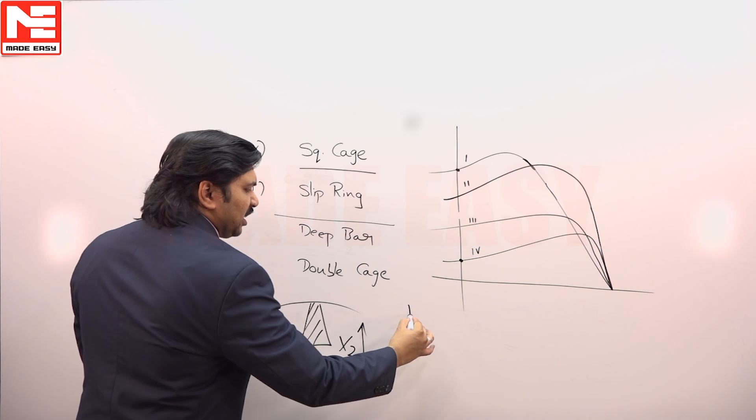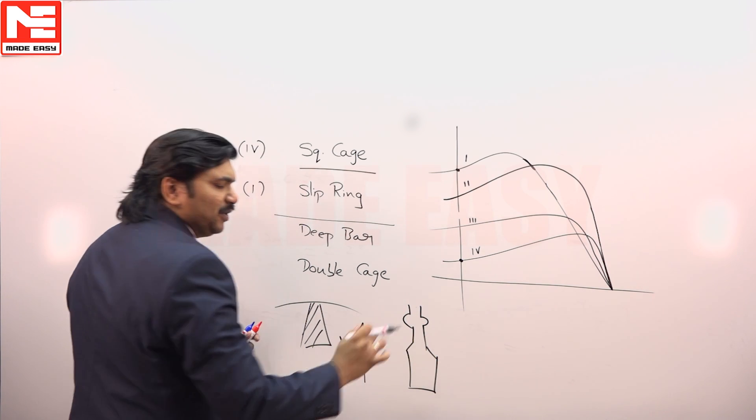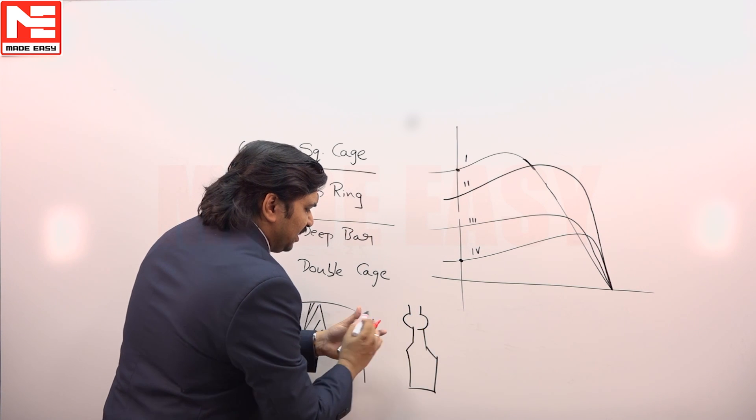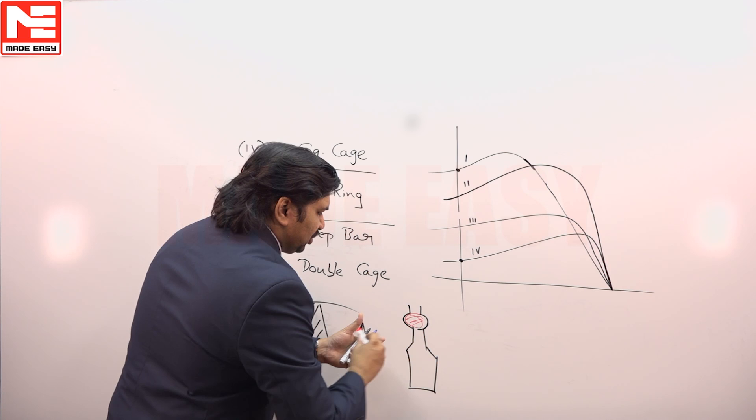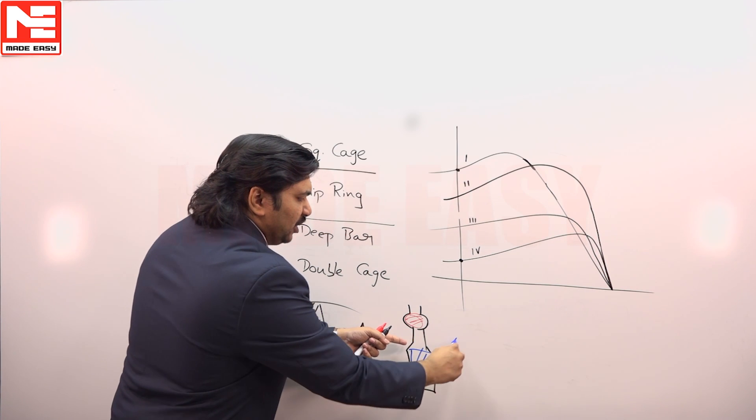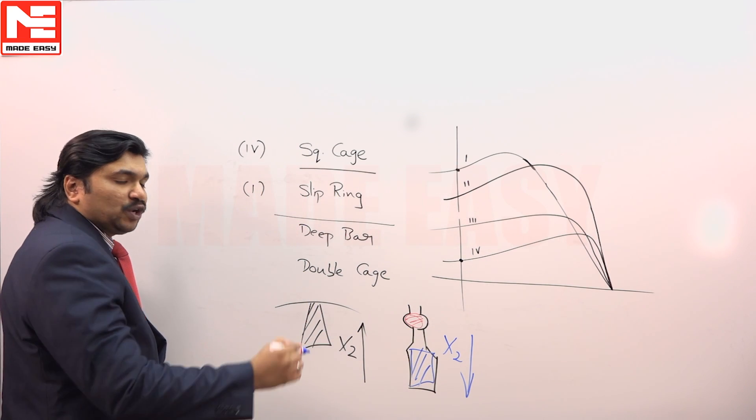Double cage is not like that. Double cage has two cages with an air gap in between. This air gap will definitely create between outer cage and inner cage. The air gap will reduce X2, because it offers reluctance to leakage in the rotor, within the rotor.